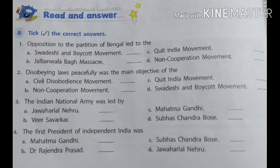Read and answer. A. Tick the correct answers. First one: Opposition to the partition of Bengal led to the... Options are: A. Swadeshi and boycott movement, B. Jallianwala Bagh massacre, C. Quit India movement, D. Non-cooperation movement. And the answer is A. Swadeshi and boycott movement.